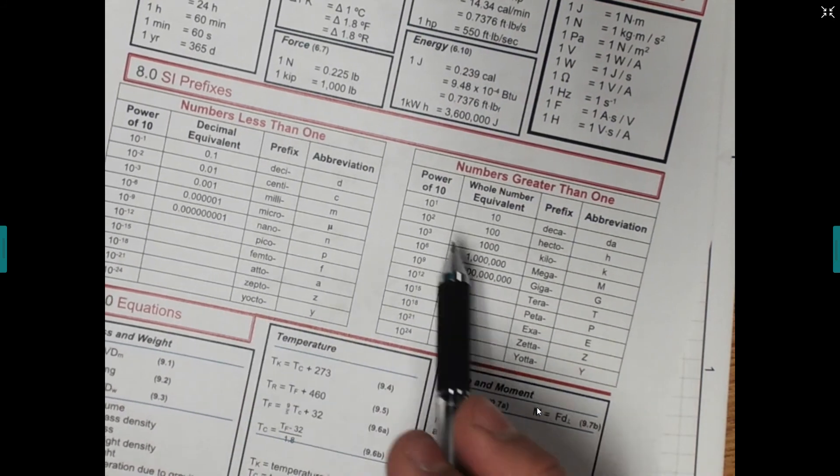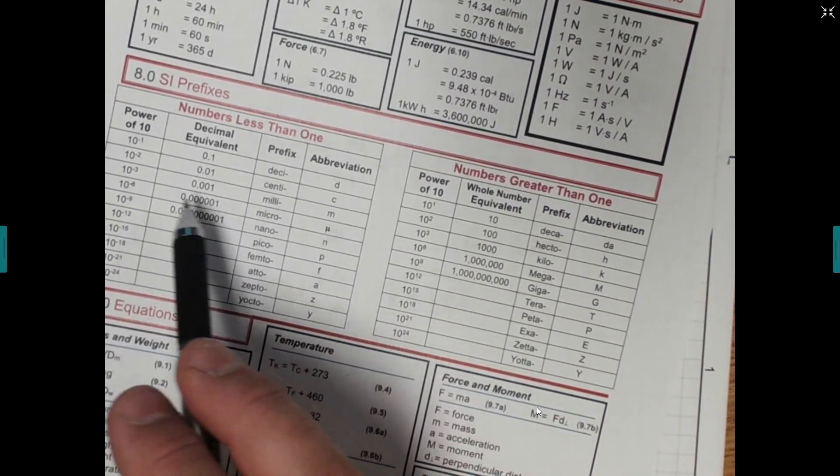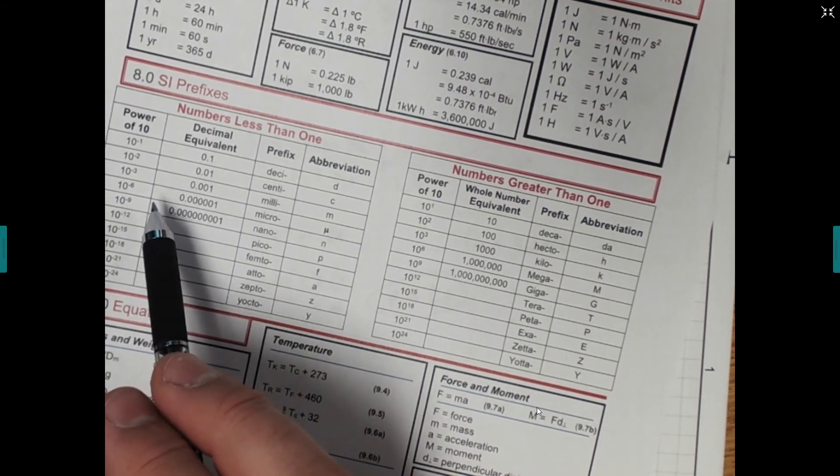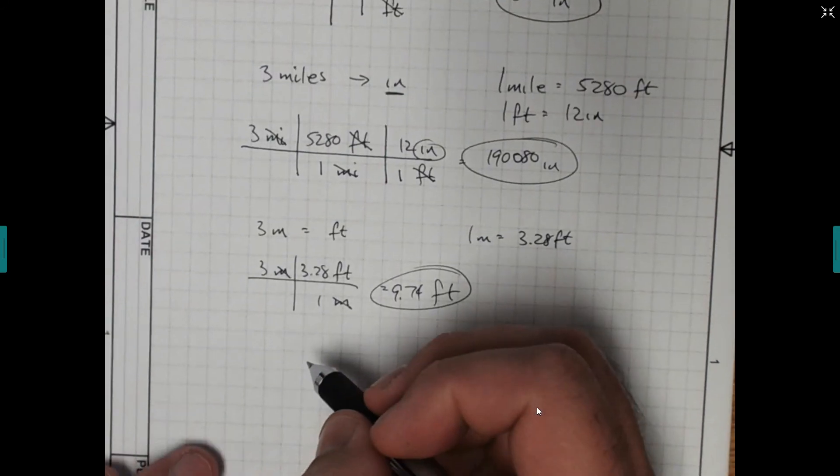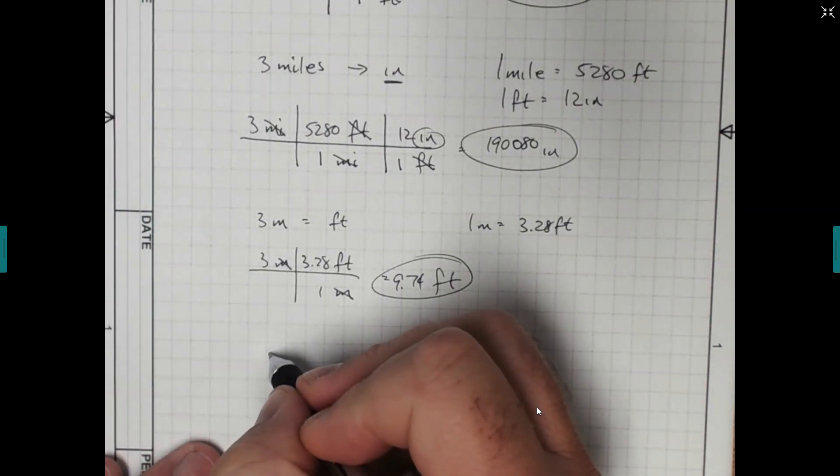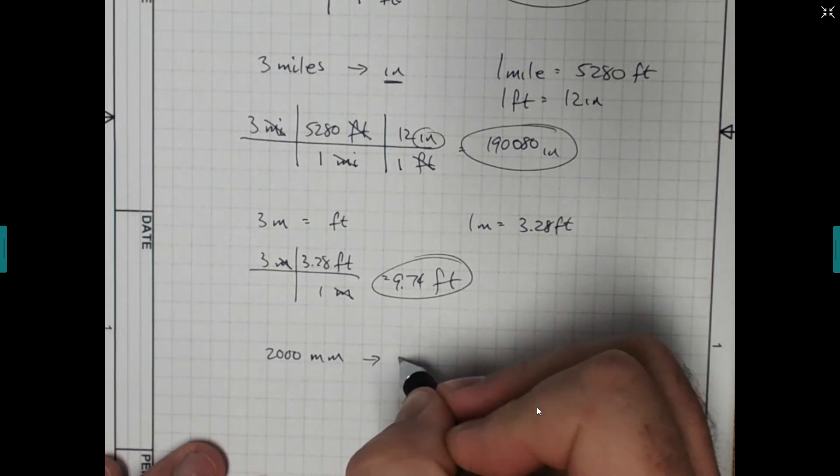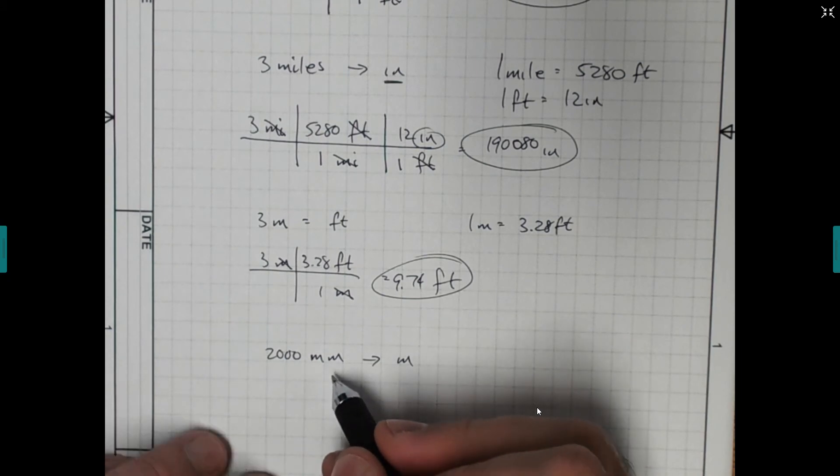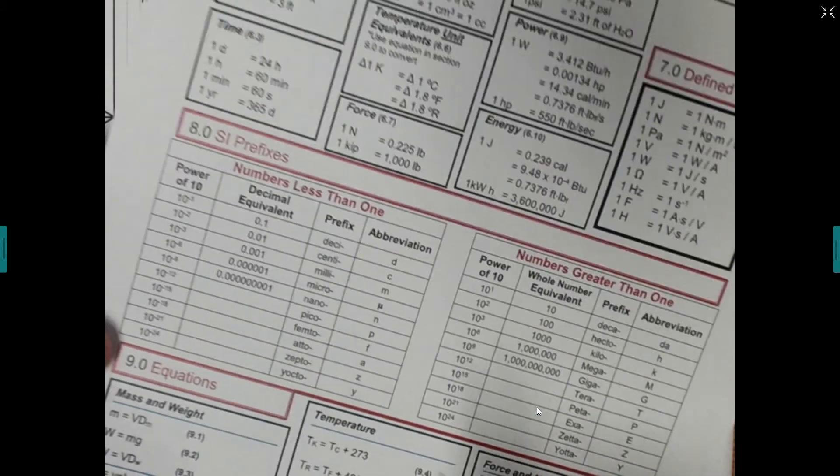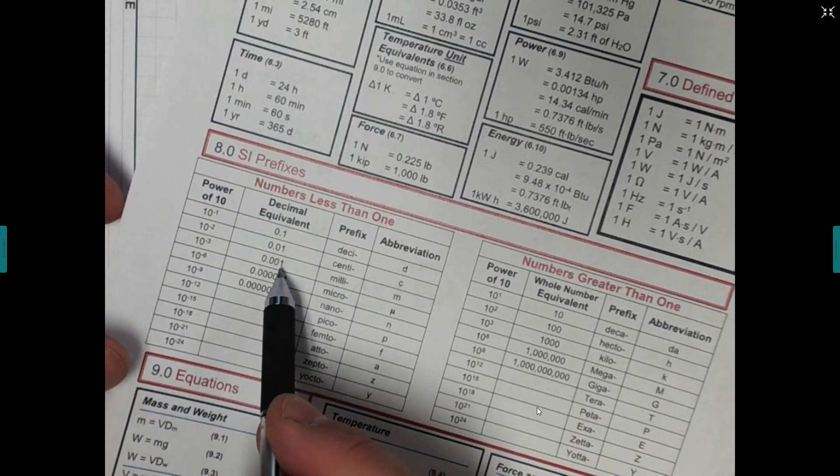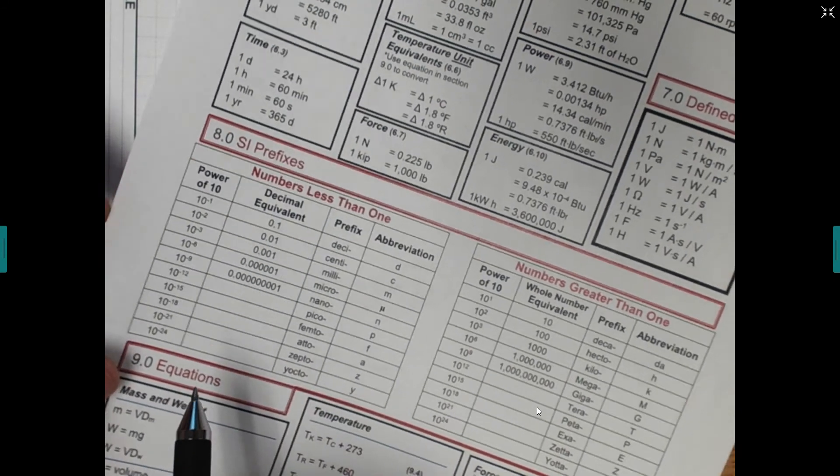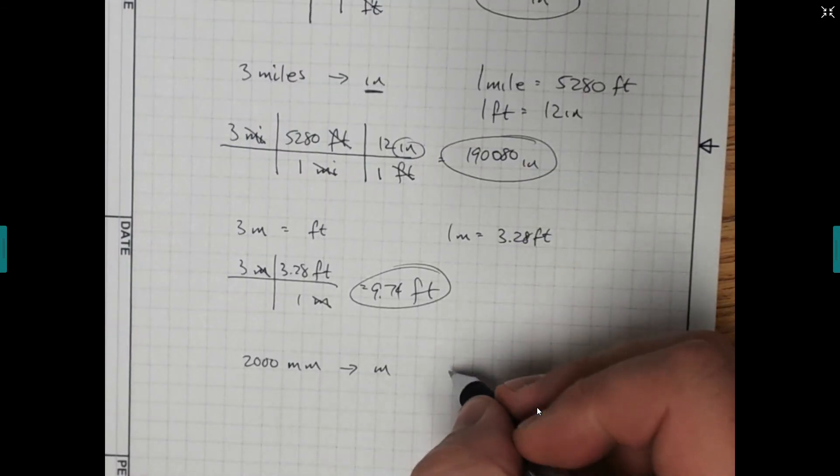So we just have to convert. Here, that conversion is very easy. We're just using our powers and our scientific notation. So if we have 2,000 millimeters and we want to convert that to meters, well, milli means, so milli is 0.001 or 10 to the negative 3.